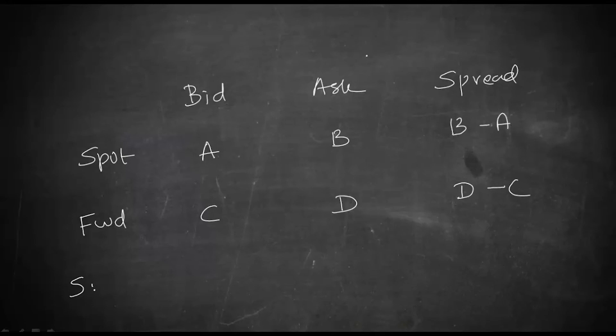Then you will also have what is known as swap. That swap is basically for bid and ask by comparing your forward and spot rate, that is forward minus spot, that is C minus A and here it is D minus B. So the bid rate and ask rate, the difference is spread, and spot rate and forward rate, the difference is called swap.